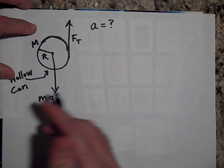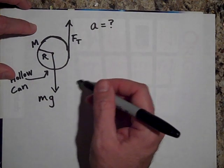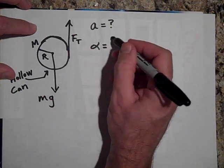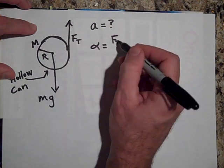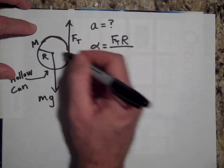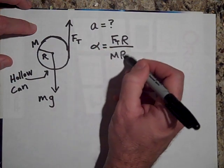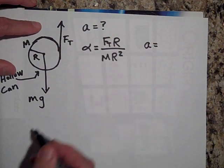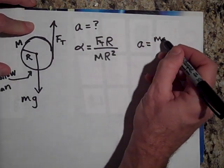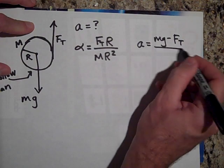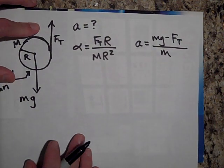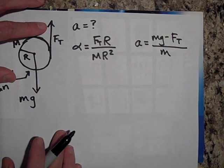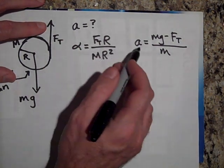If we want to get the acceleration, maybe we'll go A equals F net over M. So we know we have a tension up and we know we have an MG down of the can. Now, if I were to just look at the alpha of this thing, the net torque on this, there's no torque due to MG, it's all due to FT. So it's going to be FT times R, the tension in the string times R, all over I. Now the I of a can is just MR squared.